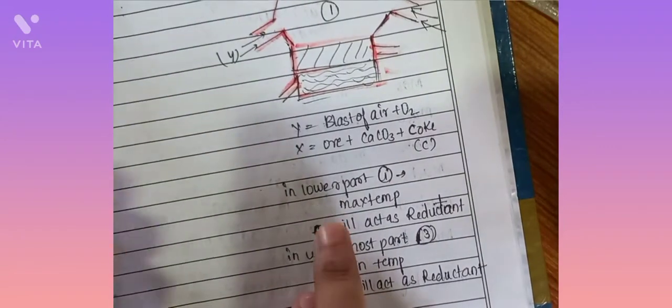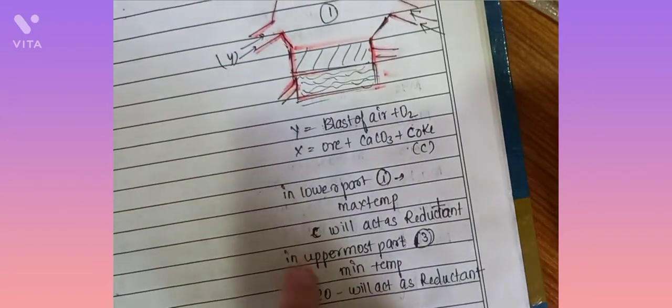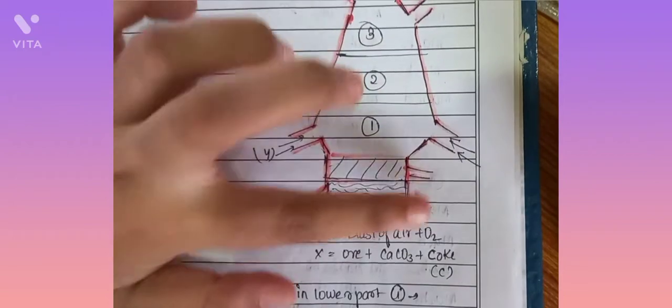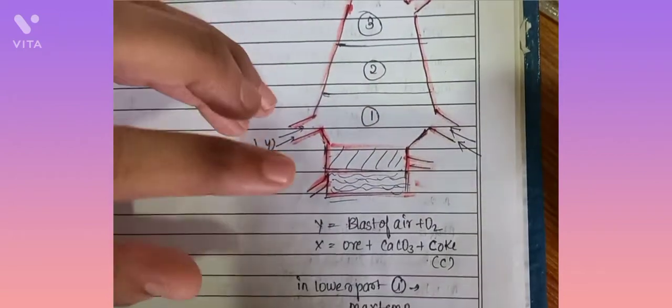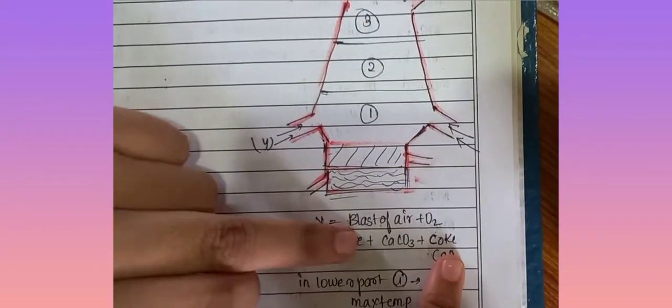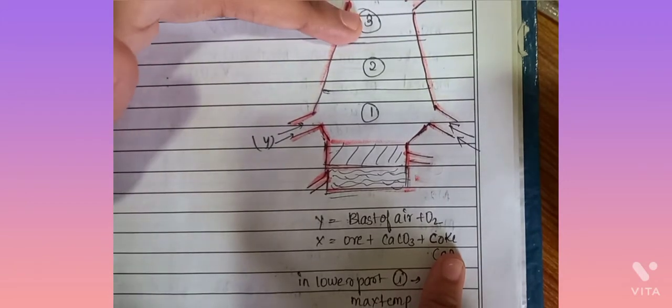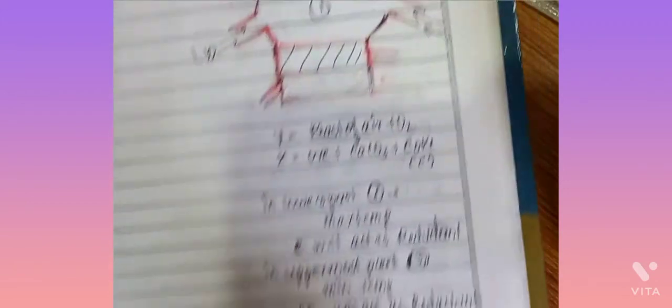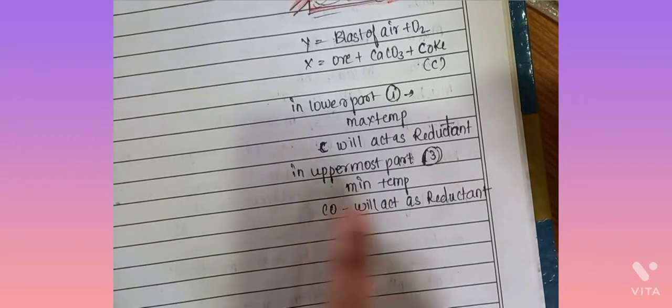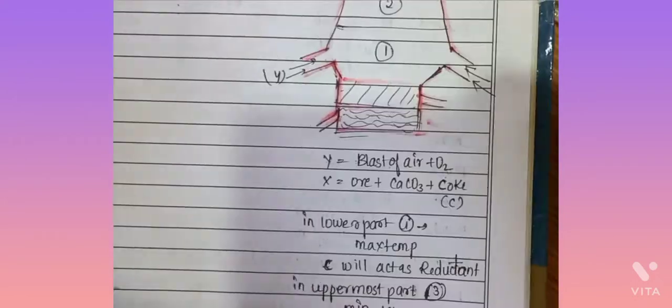In the uppermost part, as the air and oxygen go up, the temperature is getting reduced. At the third part the temperature is minimum and carbon monoxide will act as a reductant. If you know these two things it is very simple.